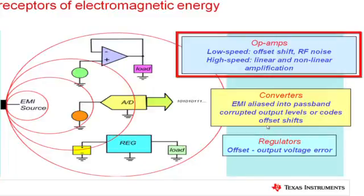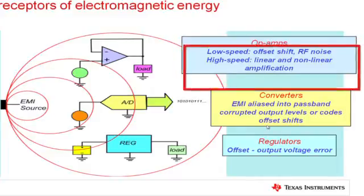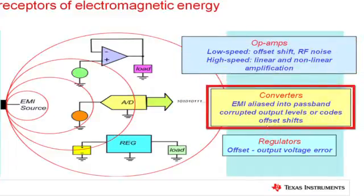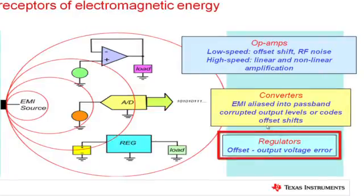High-speed amplifiers may also take on an offset shift, and because of their wider bandwidth, may have linear or nonlinear amplification. Converters, because of their wide bandwidth input sections, may have EMI aliased into the passband, corrupting the output levels or output codes, and may also take on an offset shift. Regulators, though they don't have an input pin, do have power supply and output pins, and if the EMI gets in on those pins, the same sort of thing happens — an offset shift which causes the output voltage to move.